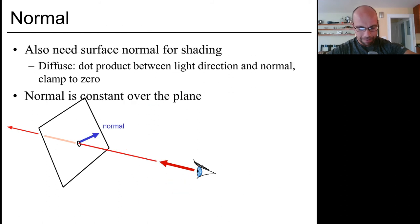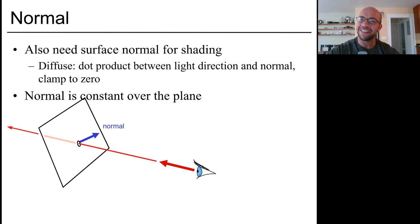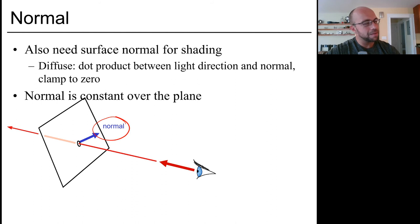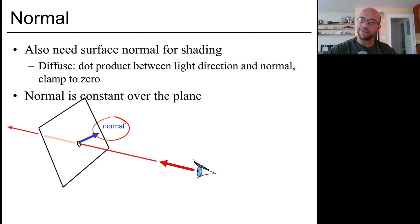Once we find the plane intersection, we need the normal vector for shading — which is conveniently built into the plane equation, so it's constant. One subtle bug: if you want a two-sided plane, you distinguish sides using the normal, but for the lighting computation you probably want the normal facing your eye, so you may need to flip its sign depending on which side you're viewing from.